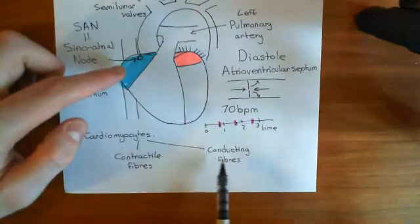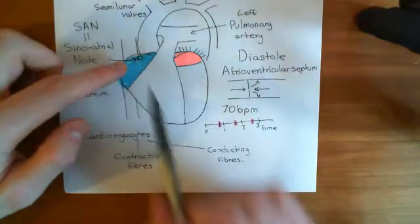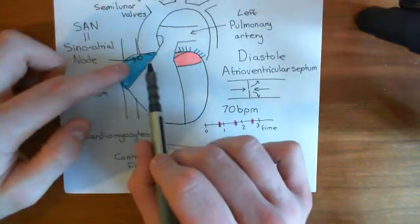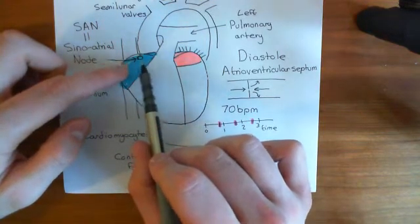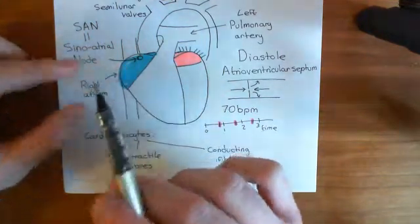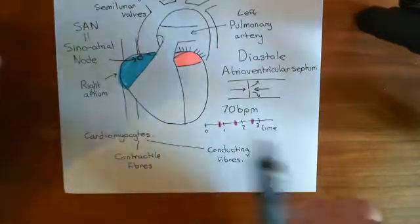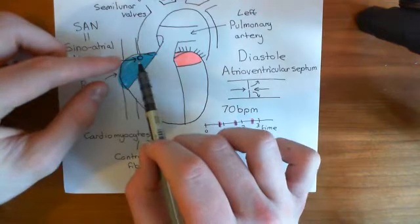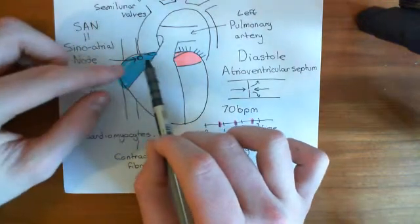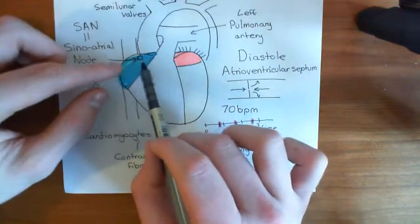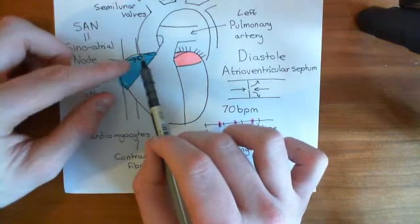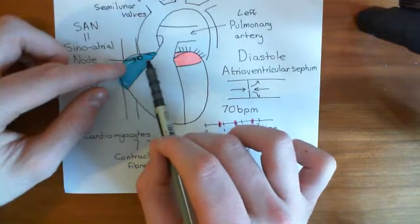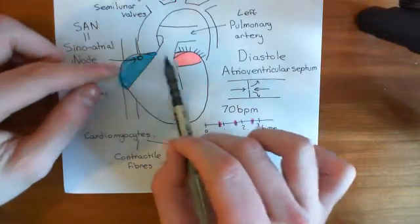The sinoatrial node cardiomyocytes are of the conducting type. All of the cells of the heart are electrically connected — they have gap junctions between them, which we will study more in later videos. This allows the action potential in the sinoatrial node to spread and cause action potentials in the surrounding cardiomyocytes, and then those cardiomyocytes will cause action potentials in their neighbours, spreading along both atria.